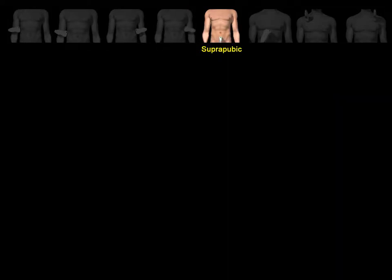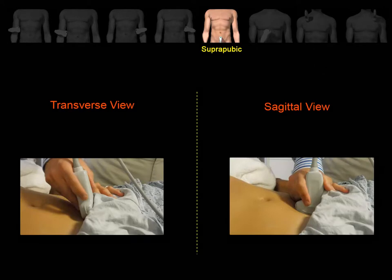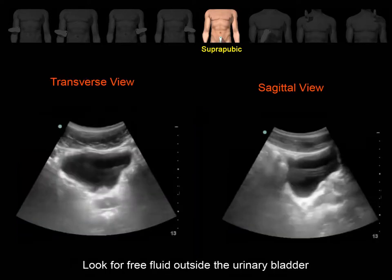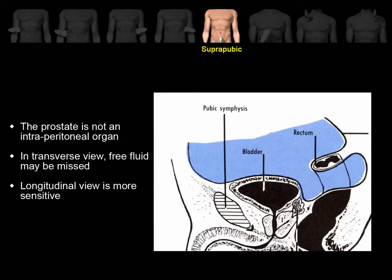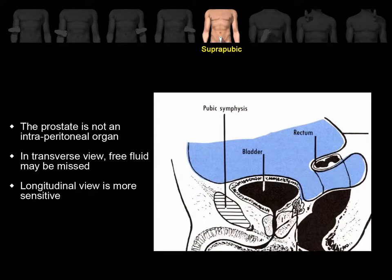The suprapubic view. Obtain both transverse and sagittal views. Place the probe in the midline, just superior to the pubic bone. Keep the marker towards the patient's right in transverse view and towards the patient's head in sagittal view. Fan through the urinary bladder to fully evaluate the anatomical space. Look for an echoic black stripe outside the urinary bladder. Note that the prostate is an extraperitoneal organ, so in the transverse view, if all you see is a slice through the prostate, there is a good chance you will miss intraperitoneal fluid. It is crucial to do the sagittal view to call the exam negative.